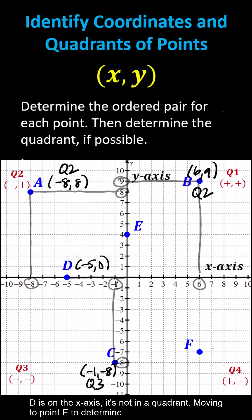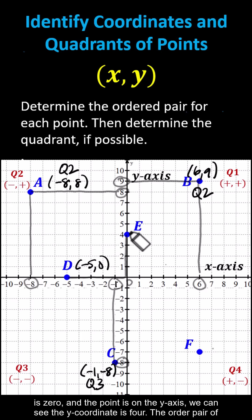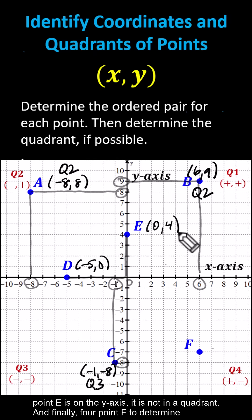Moving to point E, to determine the x coordinate, sketch a vertical segment to the x axis — the x coordinate is 0. The point is on the y axis, and we can see the y coordinate is 4. The ordered pair for point E is 0 comma 4. Because point E is on the y axis, it is not in a quadrant.